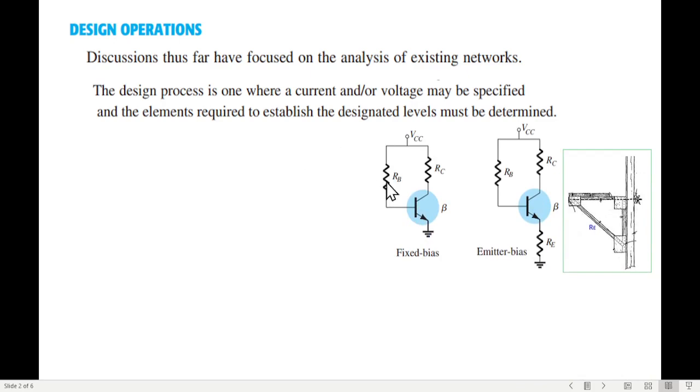To give you another example of a student's doubt - see the difference between these two circuits. This is fixed bias and this is emitter bias circuit. The only difference is that we have connected a resistance here in the emitter. You can probably easily understand if you see a building structure - this extension is not stable, so to make it stable we have connected a rod or pillar here. Same thing here - the circuit is not very stable, but to make it stable we connect a resistance at the emitter. Now the question is how big will that resistor be?